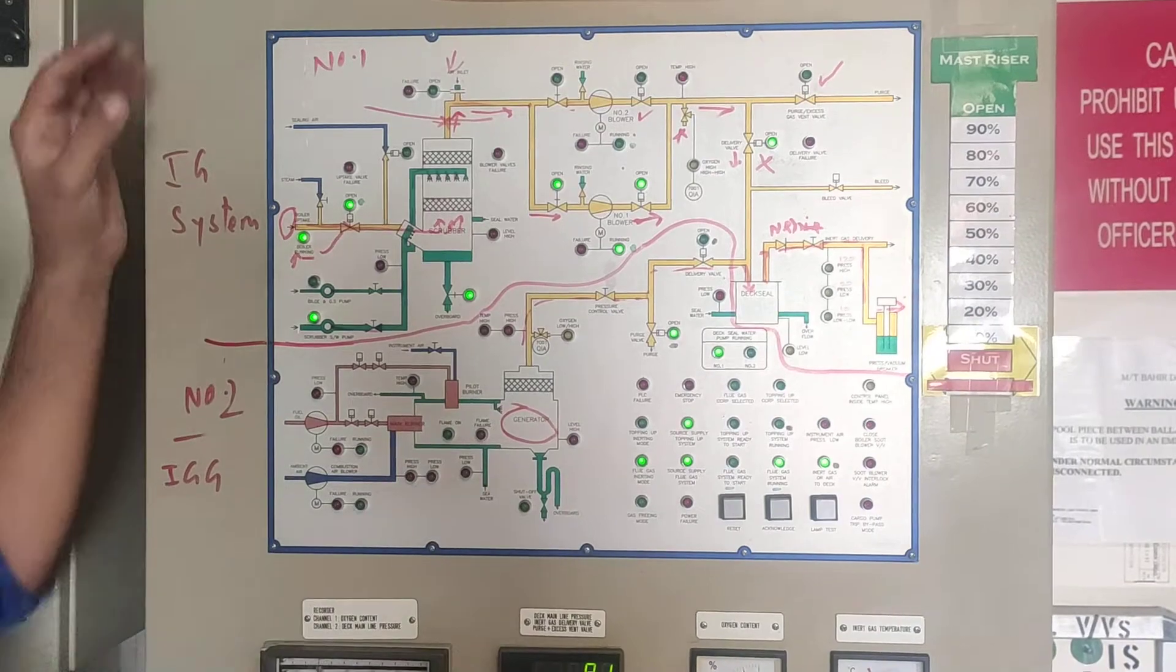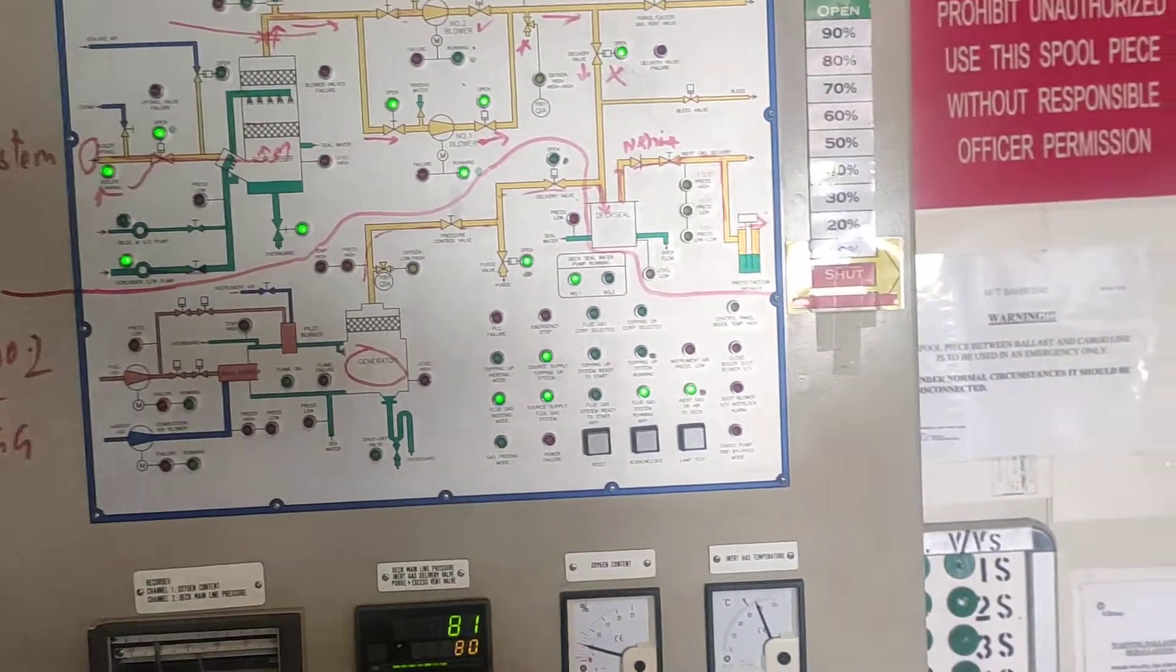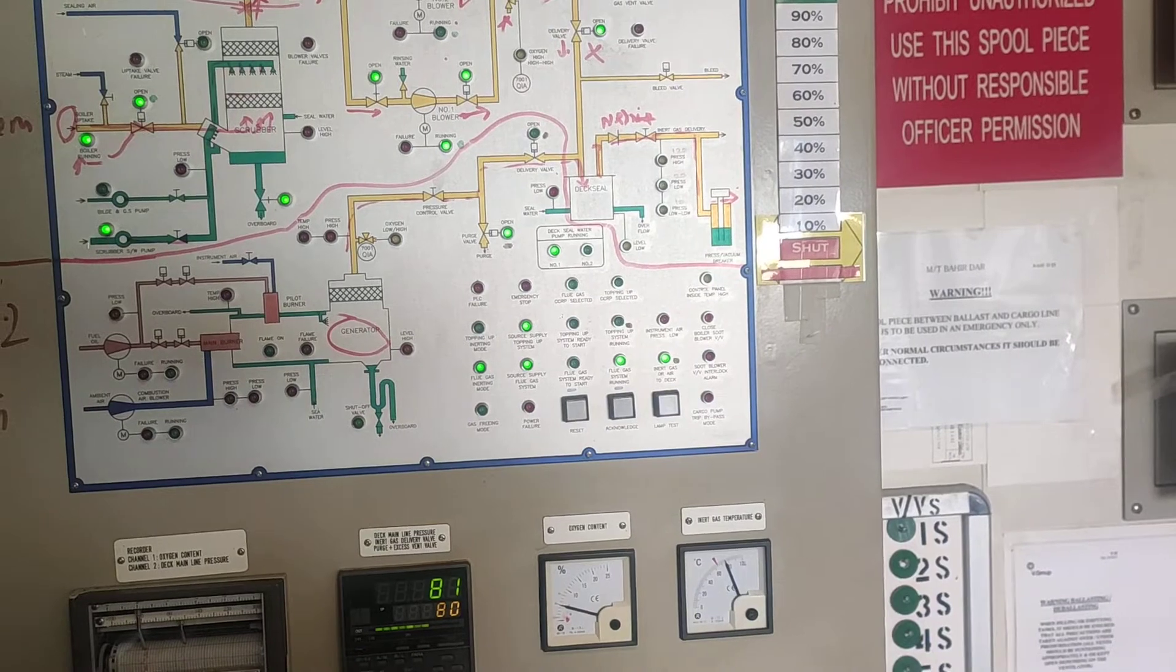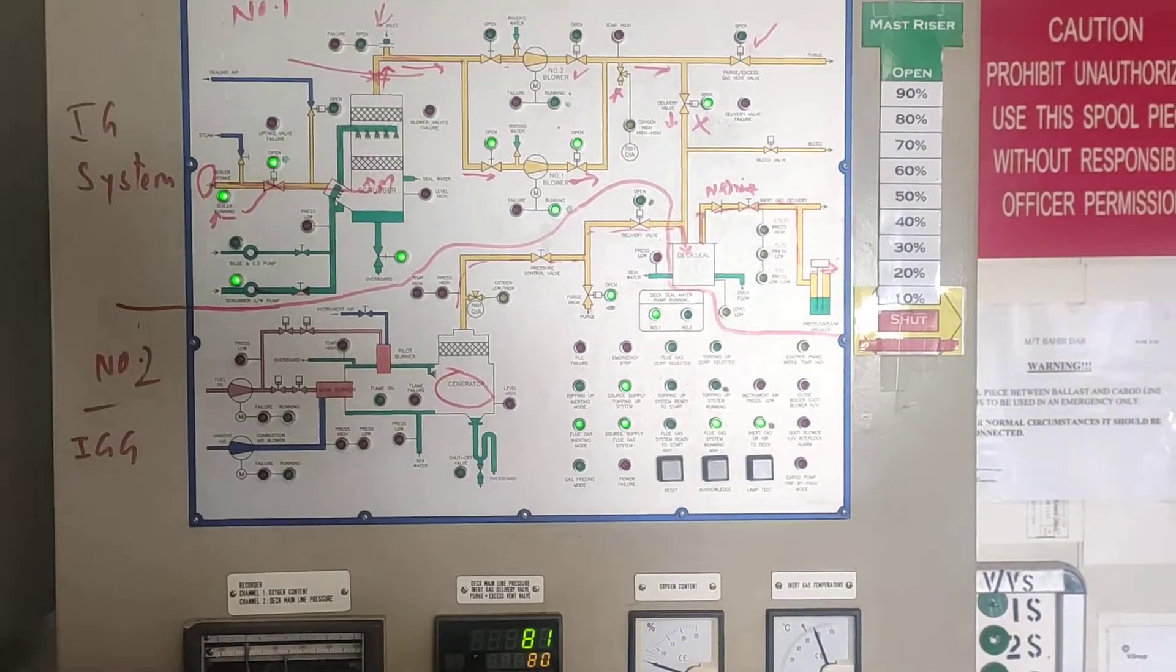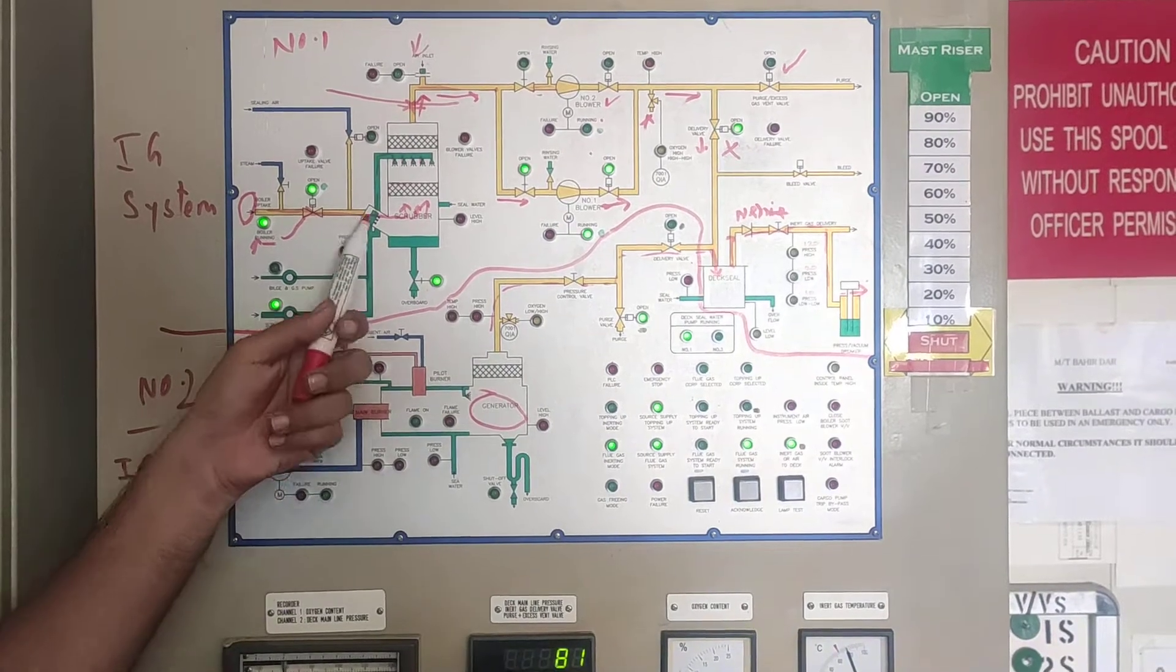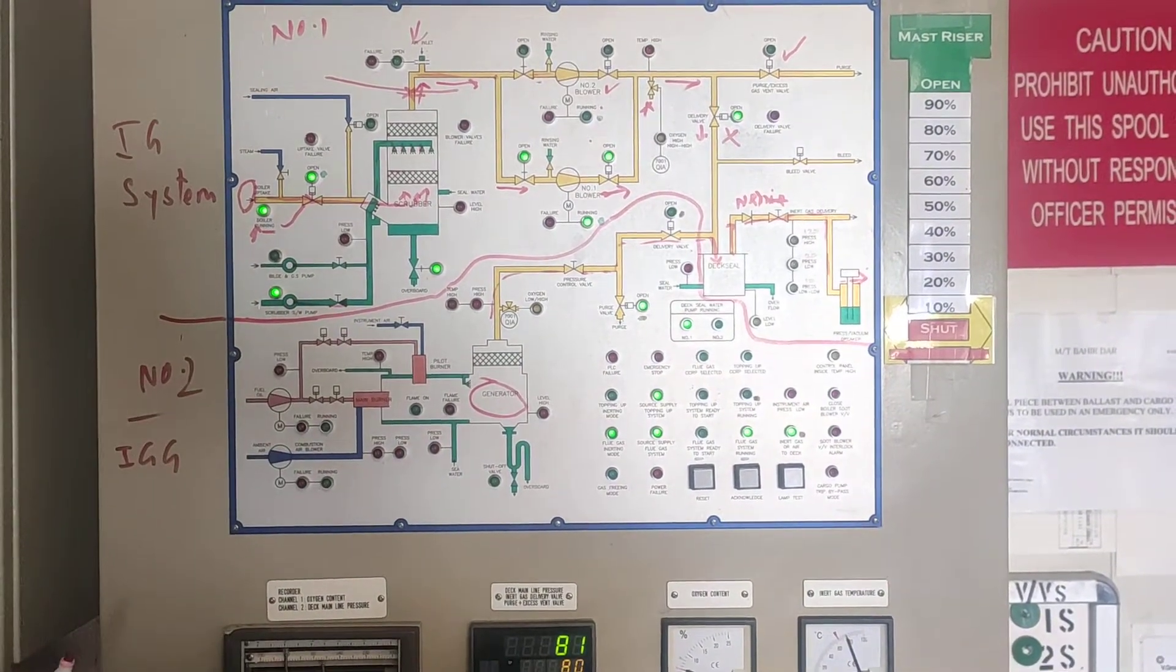This is used only when a small amount of IG is required. Manifold pressure 3.8 bar. This is how the IG works.